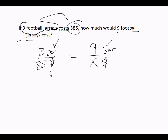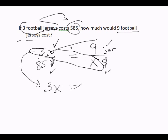Jerseys on top, jerseys on top, dollars on the bottom, dollars on the bottom. Cross multiply. 3 times x is 3x. 9 times 85—I don't know. Got to use a calculator. 85 times 9, 765.